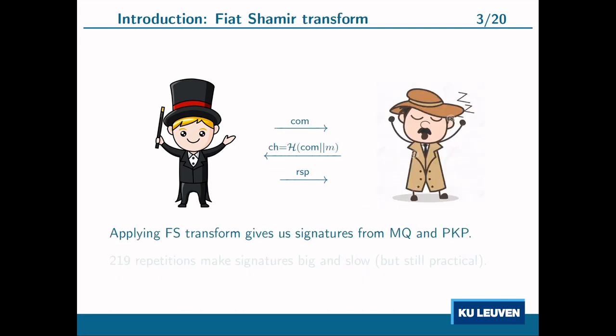One reason why sigma protocols are so useful is that they can be transformed into signature schemes with the Fiat-Shamir transform. As long as you start from a sigma protocol for a computationally hard problem, you will end up with a secure signature scheme. Since the MQ and PKP problems are believed to be hard even against quantum adversaries, applying the Fiat-Shamir transform yields post-quantum secure signatures. However, since we need to repeat the sigma protocols many times for soundness, the resulting signature schemes will not be very efficient.